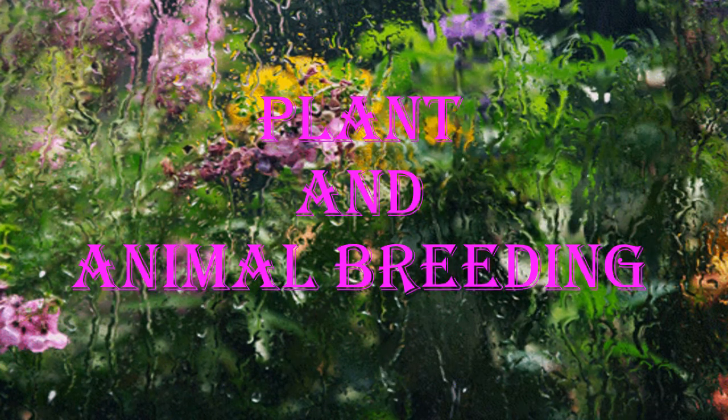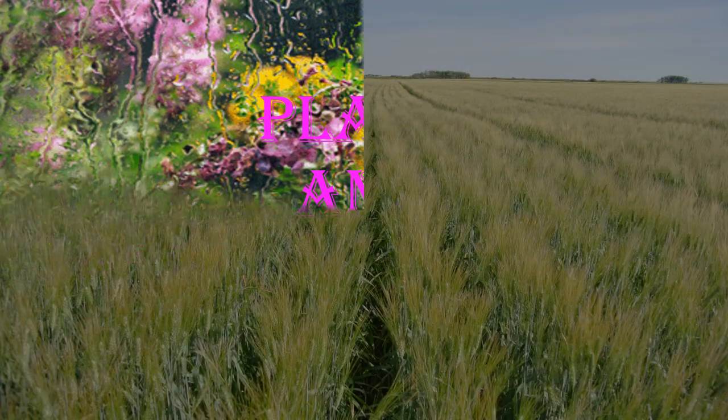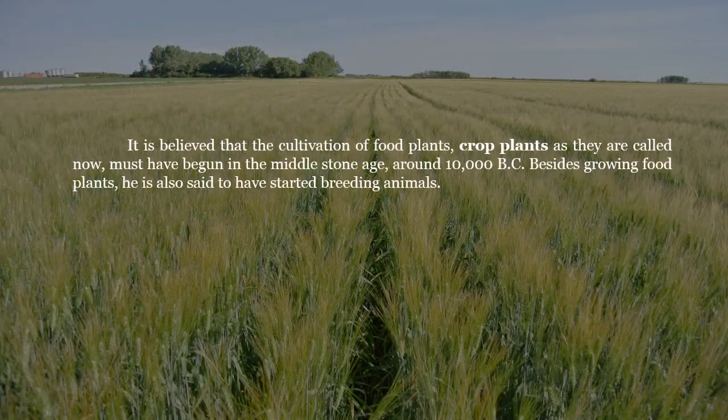Plant and Animal Breeding. It is believed that the cultivation of food plants, crop plants as they are called now, must have begun in the Middle Stone Age, that is around 10,000 BC. Besides growing food plants, he is also said to have started breeding animals.